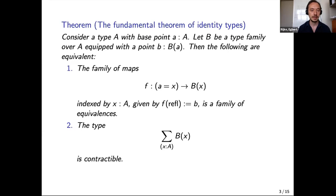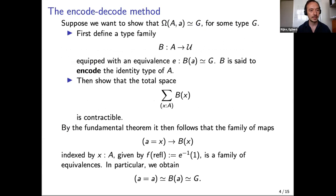This is a very nice theorem, and if you're computing identity types as your job, you should be using this theorem a lot because it makes your life easier. With this theorem there's something called the encode-decode method. If your goal is to compute a loop space of a type A, you want to apply the fundamental theorem: find a type family B over A such that B of a is equivalent to the target G.